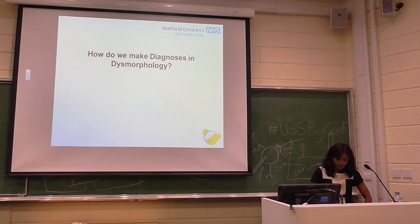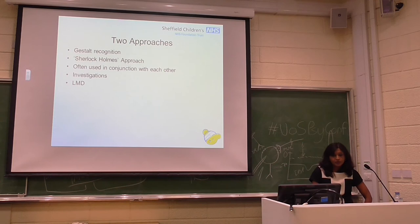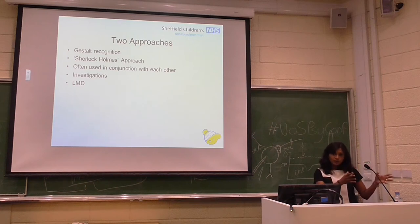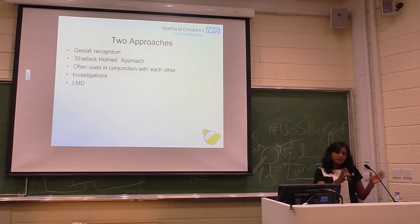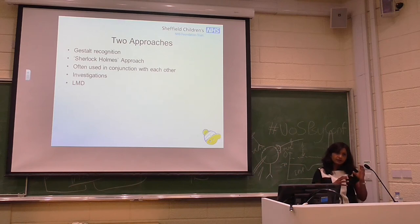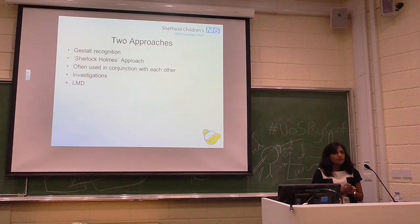How do we try and make a diagnosis in dysmorphology? We use two different approaches. One is gestalt recognition — based on the fact that we've already seen children with a particular condition, like Fragile X syndrome, and we know what the family history and physical features would be like, and there could be a behavioural gestalt. Or there could be a so-called Sherlock Holmes approach, with quite a lot of investigative work: piecing together family history, family pedigree, detailed medical history. These are used in conjunction with each other, and then combined with genetic investigations and databases such as the London Dysmorphology Database, FACE2GENE, etc.